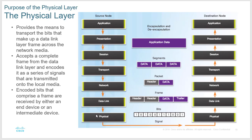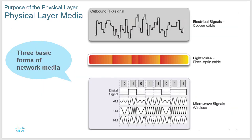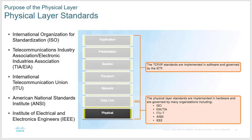There are three basic forms of network media: electrical or copper cable, fiber optic cable that uses pulses of light, and wireless that sends radio signals through the air. Depending on what you're using, different standards or standard organizations apply. The FCC is very concerned about wireless but not really about wired communication through coax or ethernet cable.